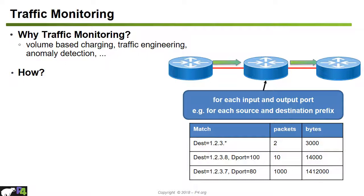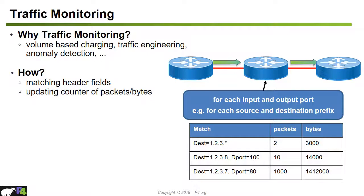In a traffic monitoring example, a middle switch monitors traffic passing through it. For each input and output port, packets and bytes are counted — for example, per destination IP address or per destination subnet. For destination wildcard 1.2.3.*, two packets totaling 3000 bytes are recorded. Basically, we match header fields and update packet and byte counters to record how much traffic has been seen for a given flow or traffic aggregate. The challenge is identifying the correct aggregates — whether to define them proactively or reactively.